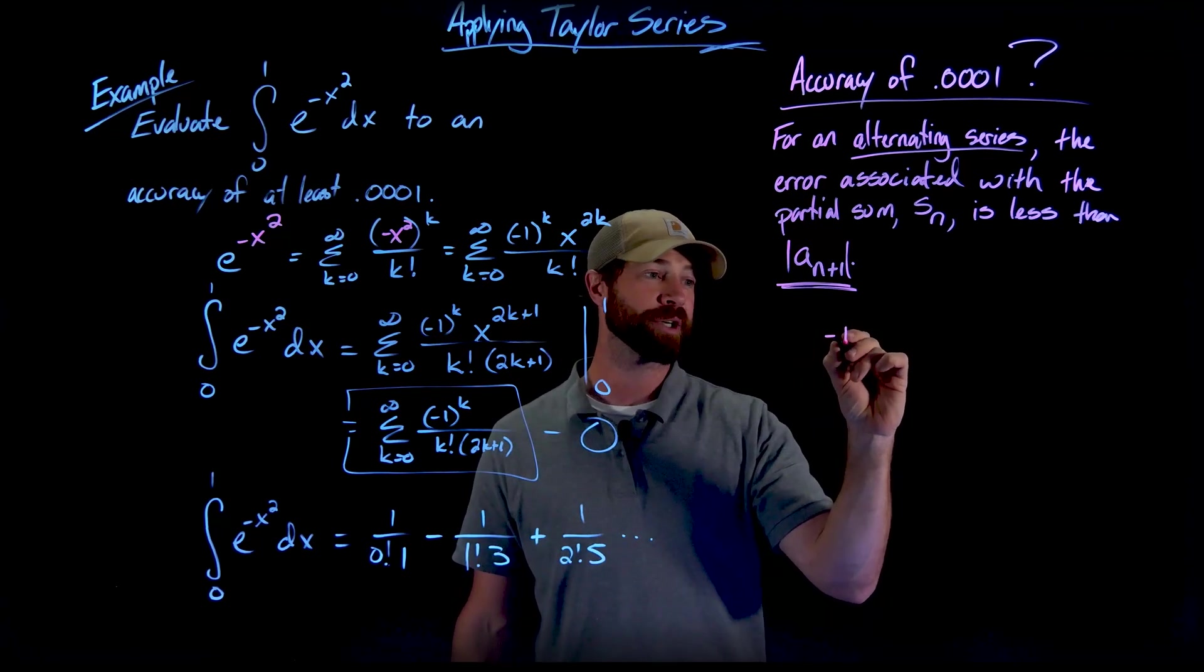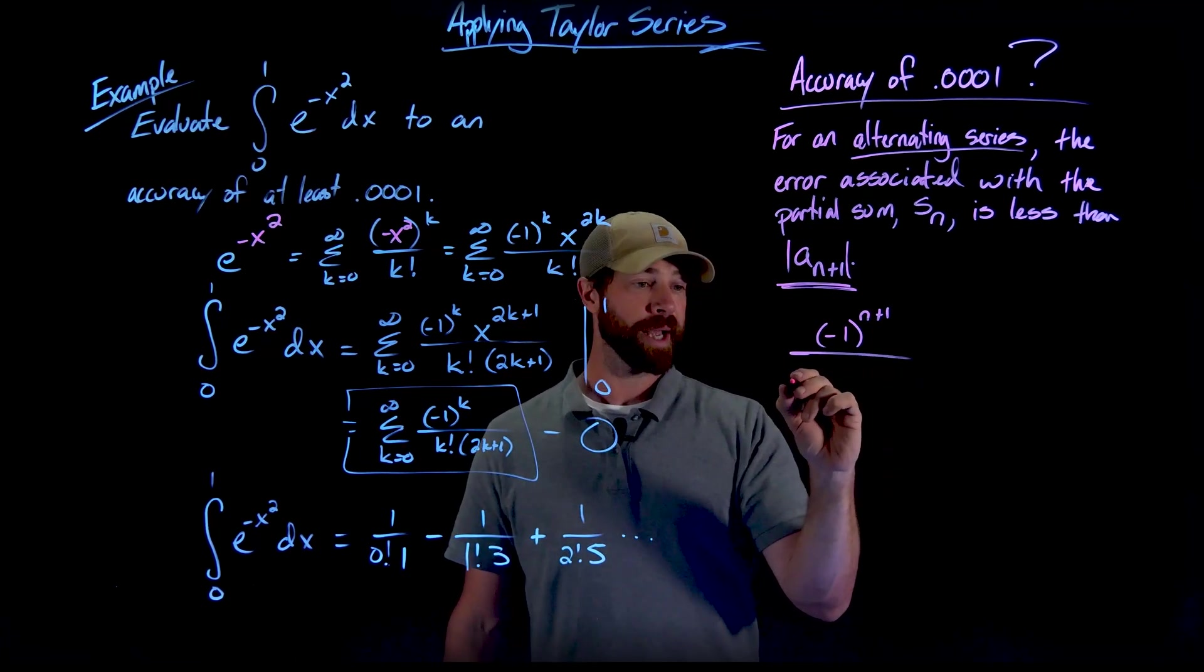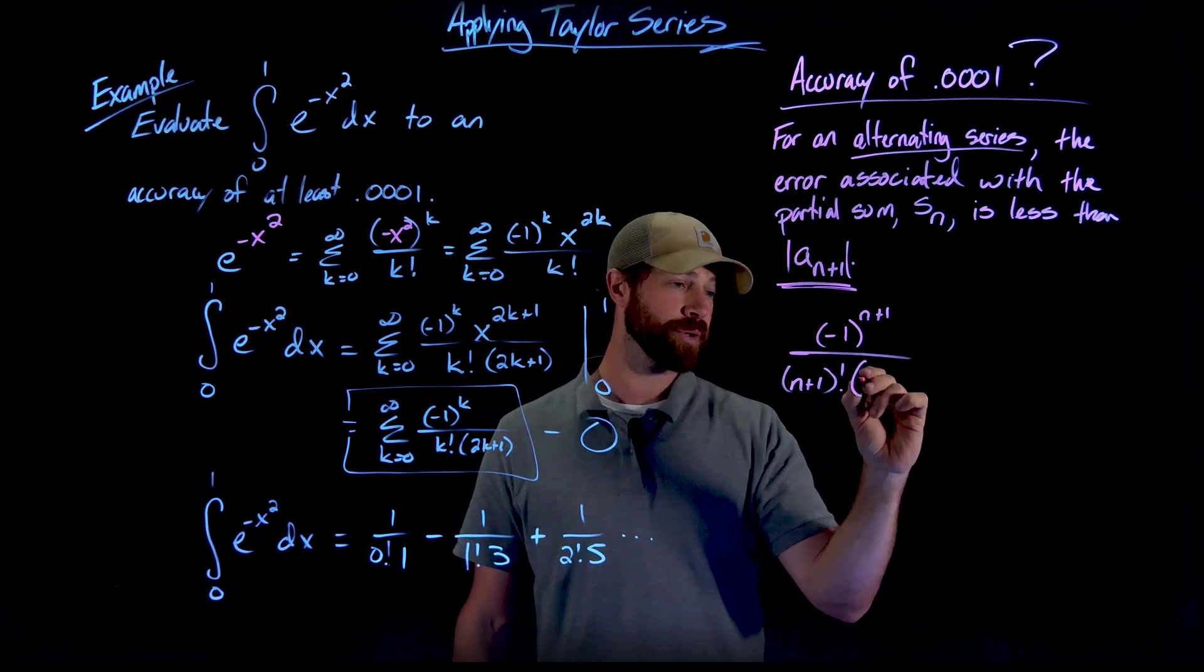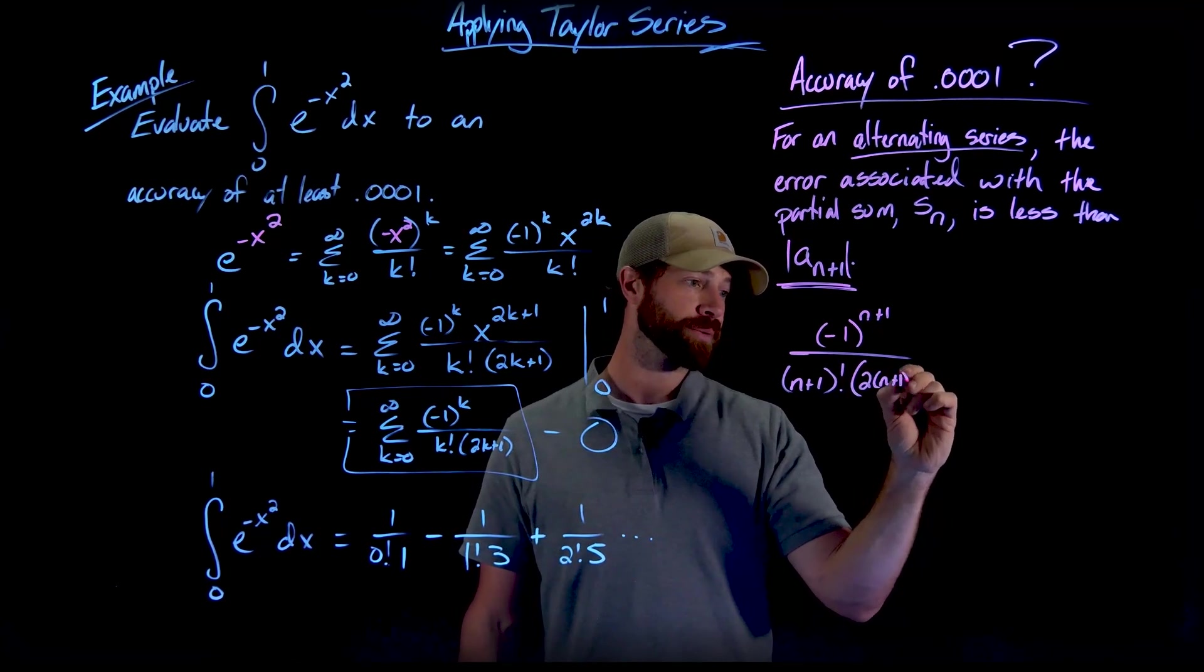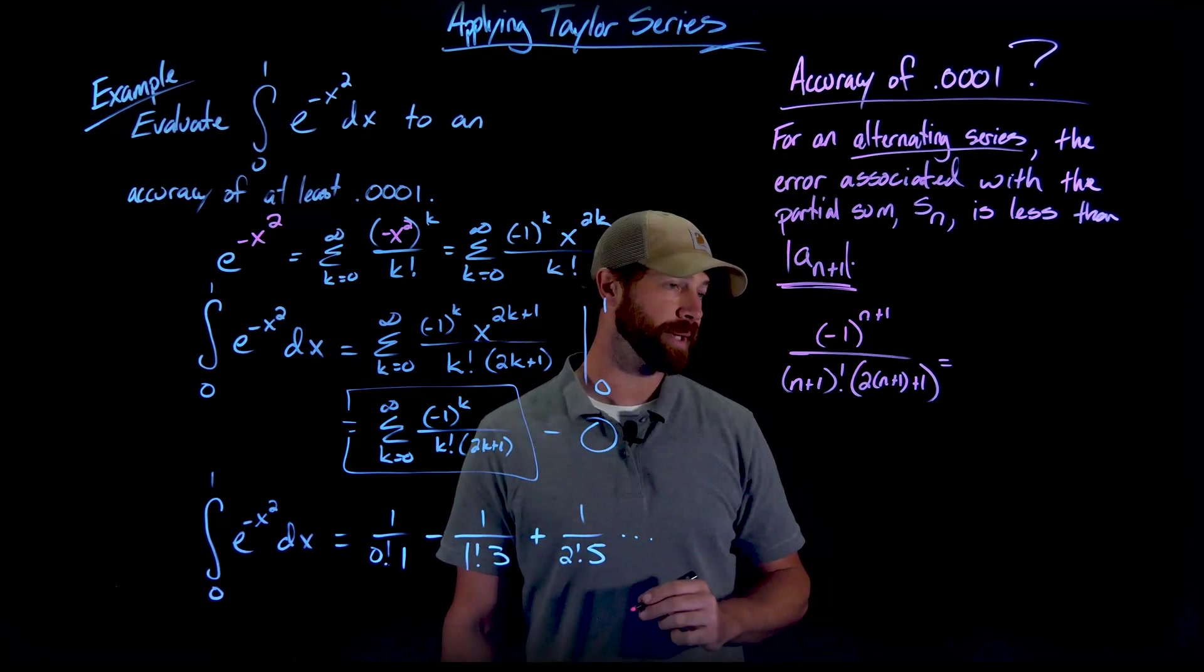So it's not a series anymore. It's just one term. So I have negative 1 to the n plus 1 over n plus 1 factorial times 2 times n plus 1 plus 1. And let's clean this up a little bit.